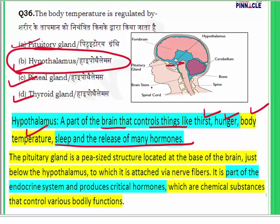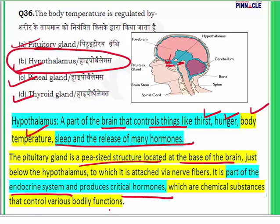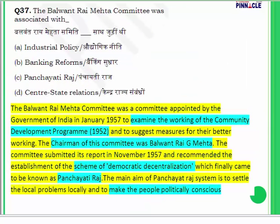The pituitary gland is a pea-sized structure located at the base of the brain. It is part of the endocrine system and produces important hormones that control many functions of the body. Both the pituitary gland and hypothalamus are very important structures located in our head.